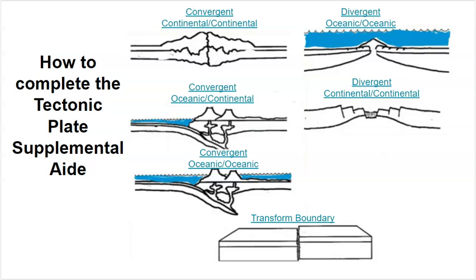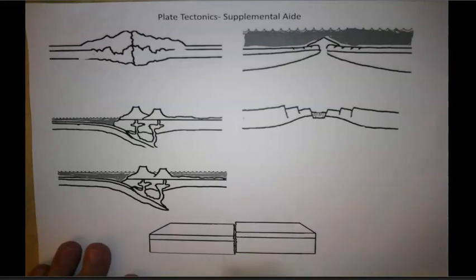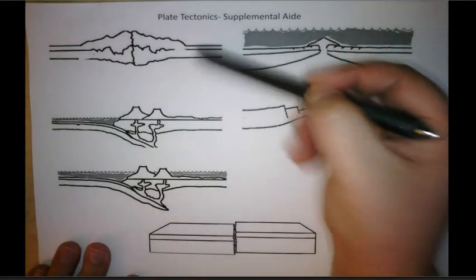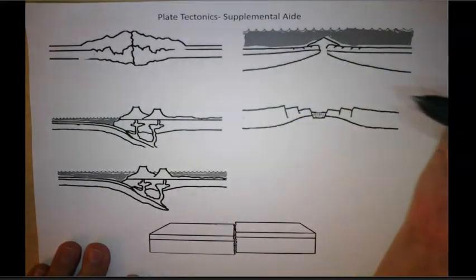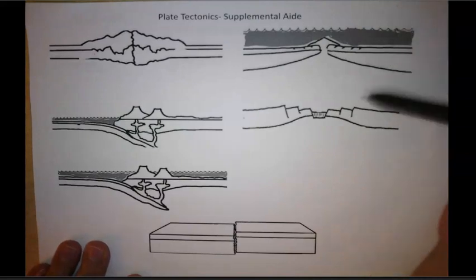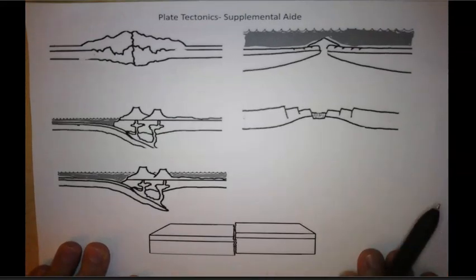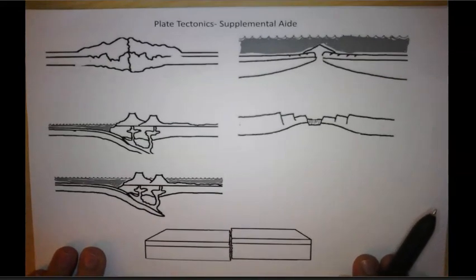You're gonna need something to write with so you can follow along with me. Here we have our supplemental aid paper. These three images are our different convergent boundaries. These two are our two divergent boundaries. And then this is our transform. These are the different ones that we'll be going over today.